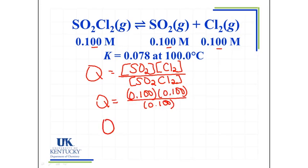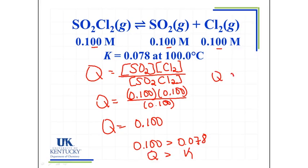And when I do this, I see that my value of Q is going to be equal to 0.100. So now I have to look at the comparison between Q and K. And when I look at them, I see that the value of Q, 0.100, is greater than 0.078. So I know that Q is greater than K. In order to reach equilibrium, I need the value of Q to decrease. So Q needs to decrease. And the way that Q decreases is that the amount of my products decrease and the amount of my reactant needs to increase.